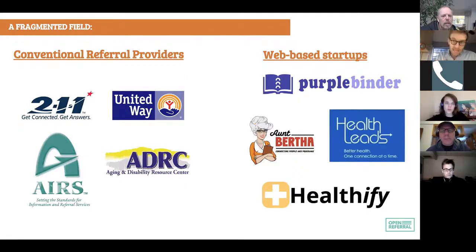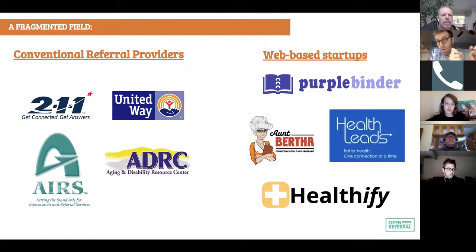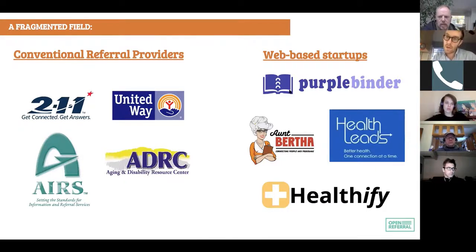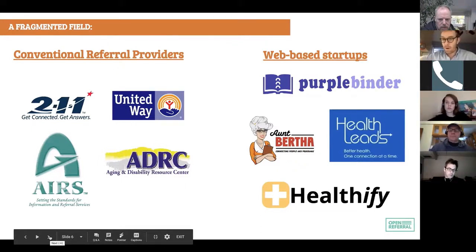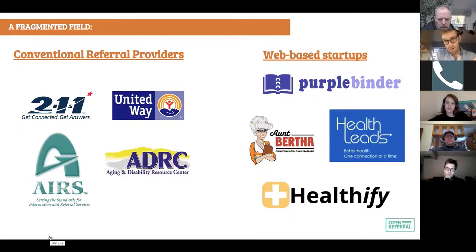As a result of that complexity, organizations like Bread for the City maintain their own database — sometimes in Access, but oftentimes just on a Word document, spreadsheet, or even a paper binder. There's a whole field of conventional referral providers, about 1,200 accredited referral providers, most of them call centers, most of them nonprofits that are part of the Alliance of Information and Referral Systems. And there's also an emerging field of web-based startups describing themselves as 'the Yelp for social services,' providing premium software to health insurance companies and hospitals.